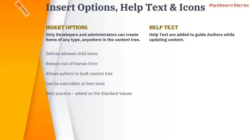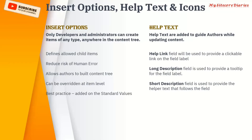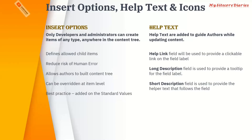Now we will see help text. Help text is added to guide authors while updating content. When you have a lot of templates with many fields, a content editor may not know the purpose of each field. Help text provides three fields: a help link, which is a URL to an external page with a description; a long description, which is used as a tooltip when you hover over the field; and a short description, which appears directly in front of the field.